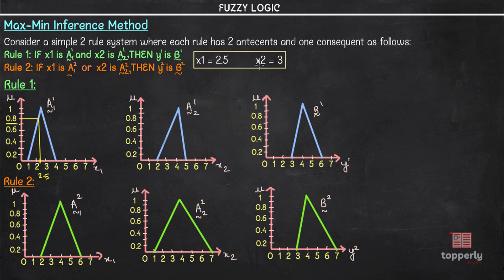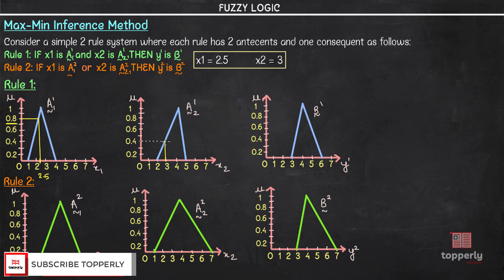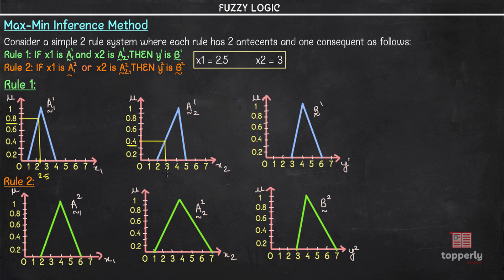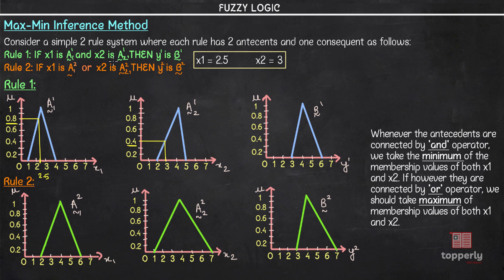Next, we find the membership value for x2, where x2 = 3. Extending the line at 3, we get a membership value of 0.4. An important thing to remember: if the rule is connected by an AND operator, we take the minimum of the two membership values of x1 and x2. If connected by an OR operator, we take the maximum. In Rule 1, which uses AND, the minimum of 0.8 and 0.4 is 0.4.